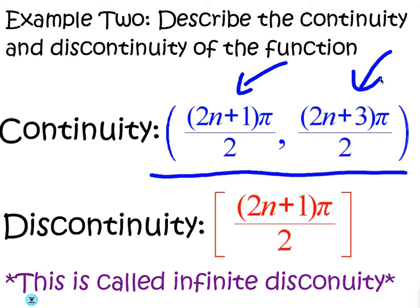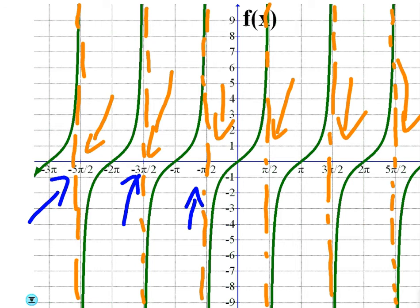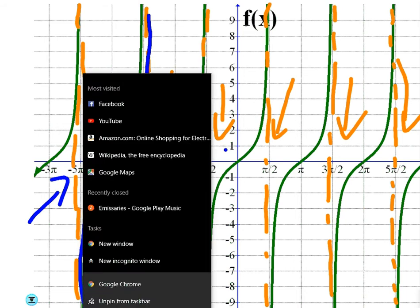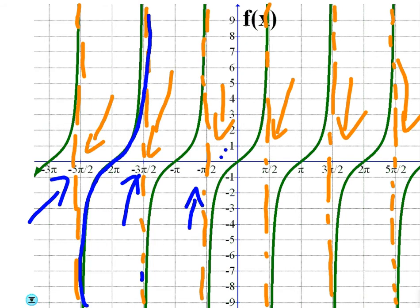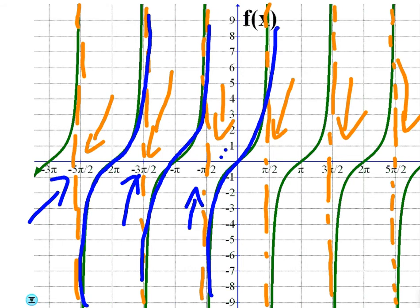Now, it's going to be continuous everywhere between those x values. So on these particular intervals, it's going to be continuous. Again, if you want to, for example, for the first one, you could write it's continuous from x equals negative five pi over two to x equals negative three pi over two. Then it becomes continuous again from negative three pi over two to negative pi over two. Then it becomes continuous from negative pi over two to pi over two. Then from pi over two to three pi over two.